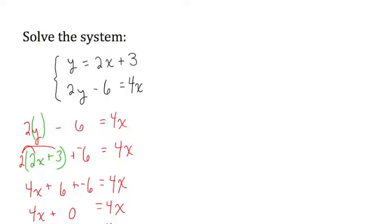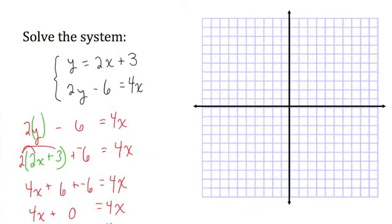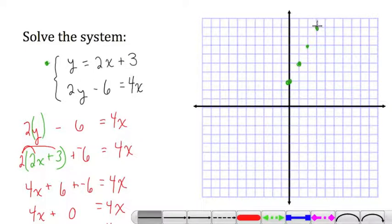So I'm going to graph this first equation here. y equals 2x plus 3. It is already in slope-intercept form. So that will be easy to graph. I'll graph it in green. So I start with the y-intercept, which is 3. So I'm going to go up 3. And then I use the slope, which is 2, in order to find more points. Up 2 over 1, up 2 over 1, up 2 over 1. And then I connect all of those points with a straight edge.